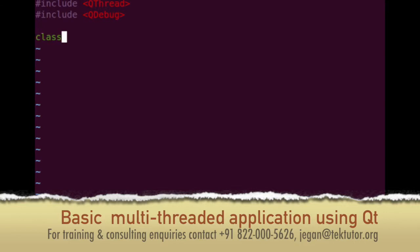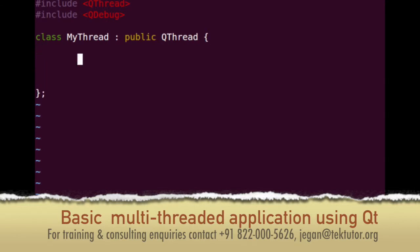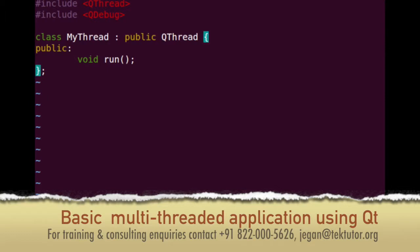I'm going to name the class as mythread, which is going to extend from QThread. In Qt, every thread has a method called run, which is the entry point function for all the threads in Qt. I'm going to provide implementation for this run thread procedure.